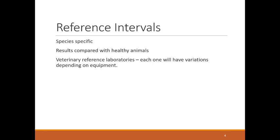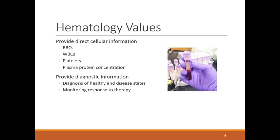There are reference intervals for each sample that are species specific, because every species has something slightly different. We use intervals because healthy animals don't all have exactly the same number of red blood cells or white blood cells — there's a normal range. Veterinary reference laboratories each have some variations in those references based on their equipment, so we need to pay attention to those specific reference intervals and not assume we know what is normal. The laboratory needs to tell us that.